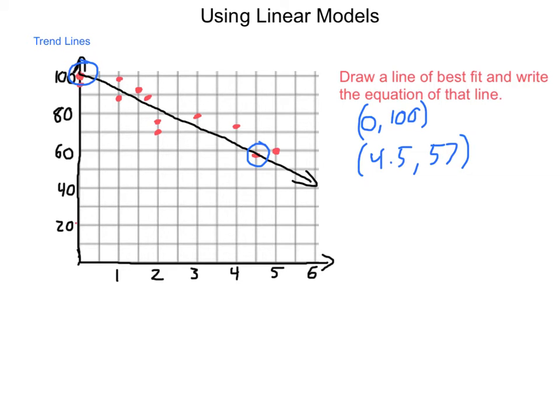So first thing up is let's find the slope. Our slope is going to be 57 minus 100, divided by 4.5 minus 0. Now 57 minus 100 will give us negative 43. When we divide that by 4.5, we have a slope that is approximately negative 9.56.